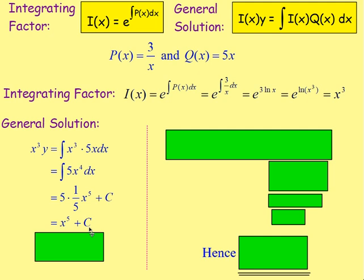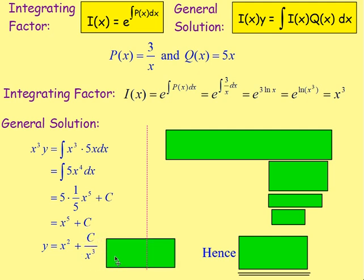Remember, you want to get down to y equals for your general solution. So you'd have to divide through by this x cubed. So we'd end up with y equals. If we divide by x cubed, well, we're dividing the x to the power of 5 by x cubed, leaving us with x squared. And because we're dividing this constant by something in terms of x, we would write down that it's c divided by x cubed. And that there is the general solution.